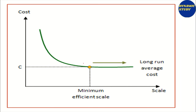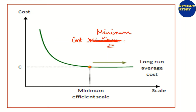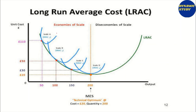Next is long-run average cost. The objective of cost is cost minimization — minimum cost. When we talk about minimum cost, we produce the optimum level of output at minimum cost — this is the minimum efficient scale. The long-run average cost curve is an envelope of the short-run average cost curves. It represents the minimum level of cost producing the optimum level of output. The declining portion is called economies of scale, and after the minimum point we have diseconomies of scale.